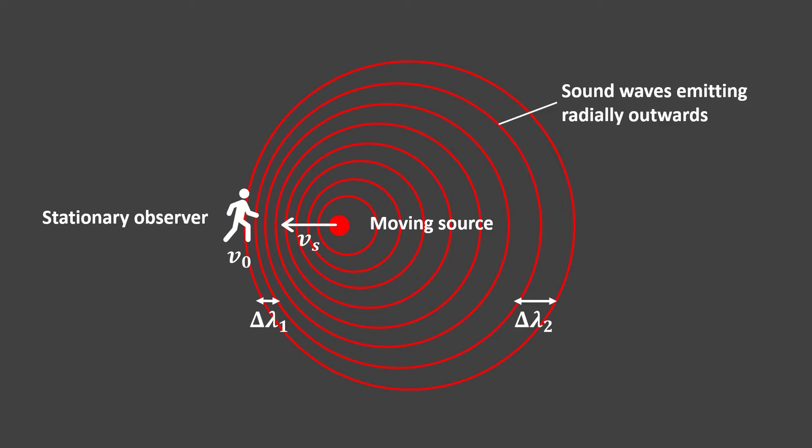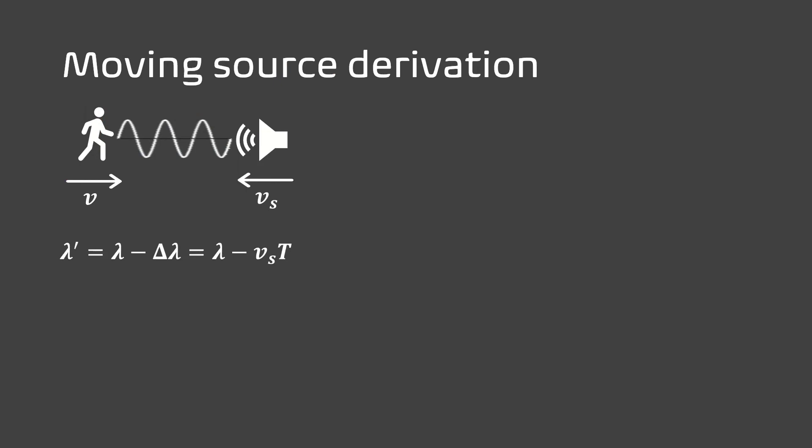The observed wavelength and frequency derivation is as follows. Again, we use the equation wavelength equals wave speed over frequency and insert our value for wavelength into the equation and rearrange. The same is done for observed frequency.